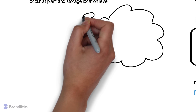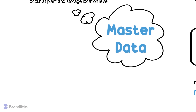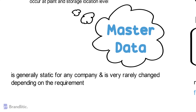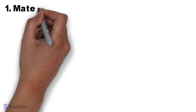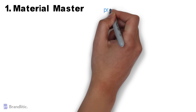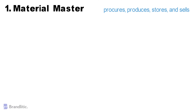As I just stated about master data, let's discuss the role of master data in SAP PP. Master data is generally static for any company and is very rarely changed depending on the requirement. There are five master data types to be managed in the production planning module. The first is the material master, which contains information on all the materials that a company procures, produces, stores, and sells.